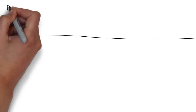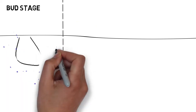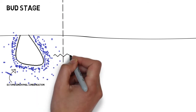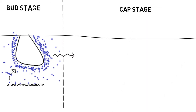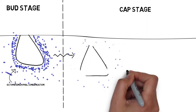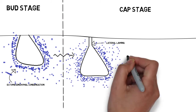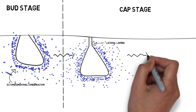In the bud stage, the tooth bud continues to grow and proliferate while the condensation of ectomesenchyme continues. As the bud stage progresses towards the cap stage, the tooth bud continues to grow in the downward direction. When it is growing downward, it drags a part of the dental lamina along with it, and we call this part the lateral lamina — it is simply an extension of the dental lamina which the tooth bud makes when growing downwards.